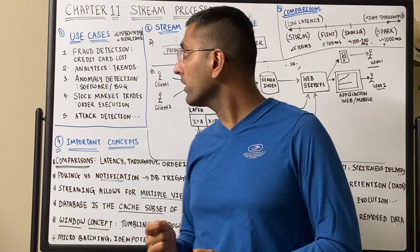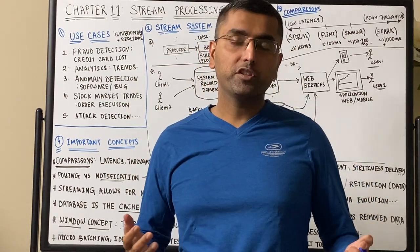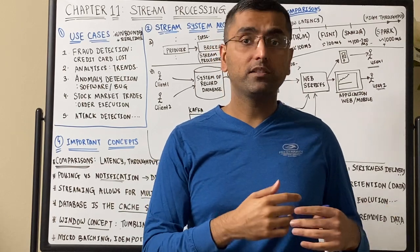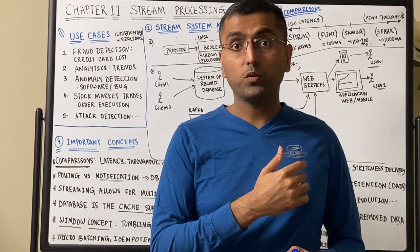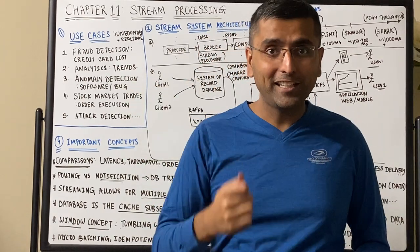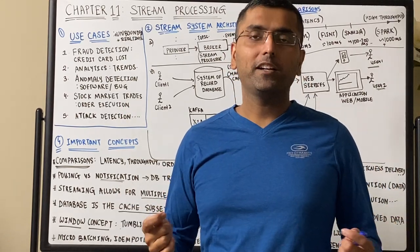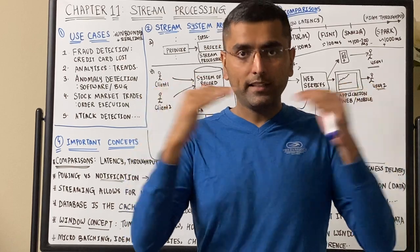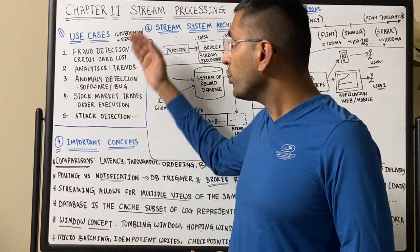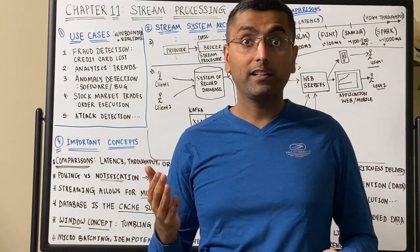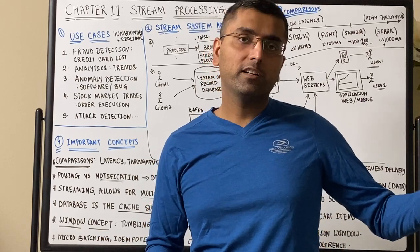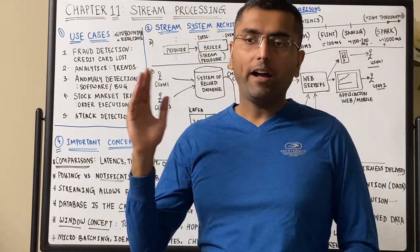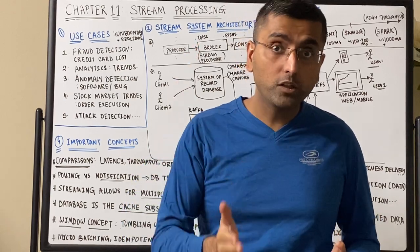Anomaly detection is another use case — maybe a computer went down and you want to poll machines to find out if they need replacement. Anomaly detection requires near real-time action. Stock market trends and trade settlements also happen within microseconds: there's a seller and a buyer that need to match, and those matchings happen in near real time. Even in military surveillance, you don't want to wait all day when an attack could have started at midnight. Many use cases involve unbounded events where you need to act on insights immediately.